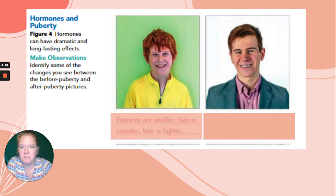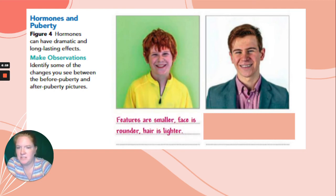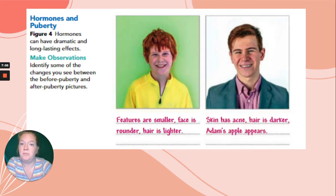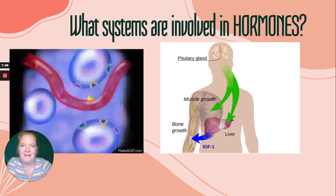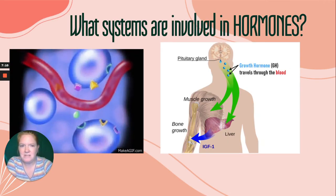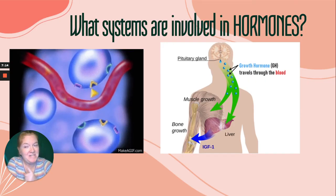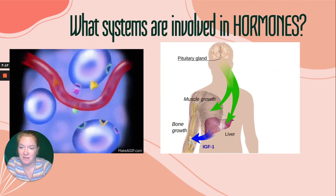There are changes that happen in puberty, and hormones are responsible for those changes. You might notice some differences between pre-puberty and post-puberty. So what systems are involved in hormones? Remember, it's not just the endocrine system — it has to work with something else.